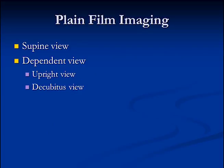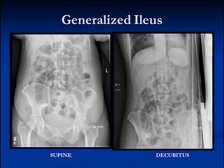When imaging the abdomen, we're going to do a supine view and two dependent views — upright and decubitus, or either one. Whenever you do plain film imaging, you should try to get a dependent view as well. This is an example of a generalized ileus — we've got air everywhere in the bowel, large bowel and small bowel, only mildly distended. On the supine and decubitus views, the patient is laying on a side right side up, so if there's any free air we can see it lying adjacent to the liver. We've got loops of large and small bowel with no air-fluid levels at all, so this is a generalized ileus that will clear up on its own.